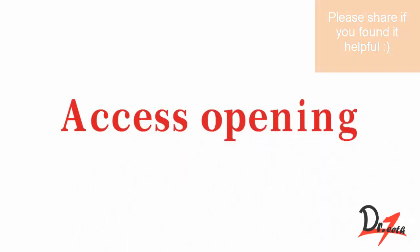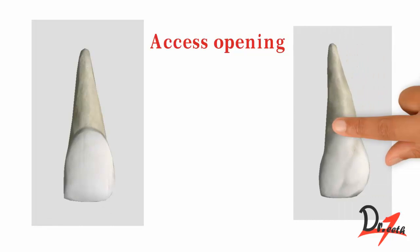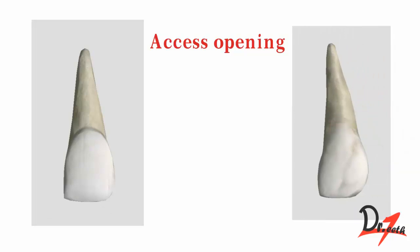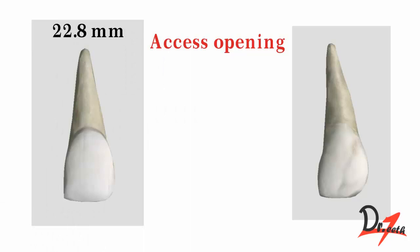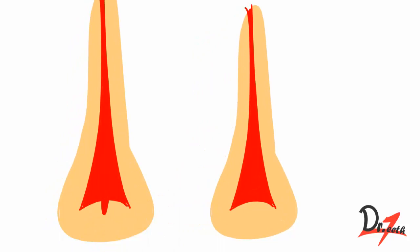Now let's look at the access cavity opening. We learn about the maxillary central incisor by comparing it with the lateral incisor. The length of the central incisor is 22.8 mm and the lateral incisor is 22.5 mm. The pulp chamber shape of both is similar, with the lateral being slightly smaller. The central incisor has 3 pulp horns corresponding to the mamelons, while the lateral incisor has 2.